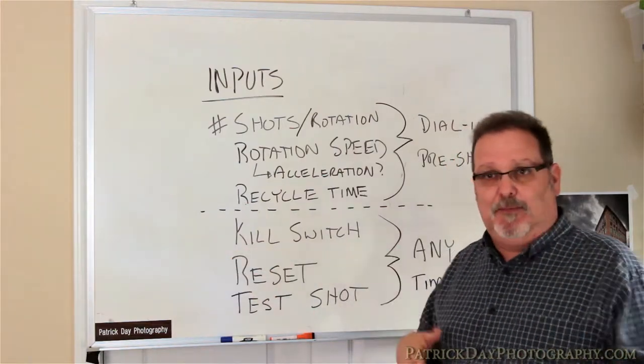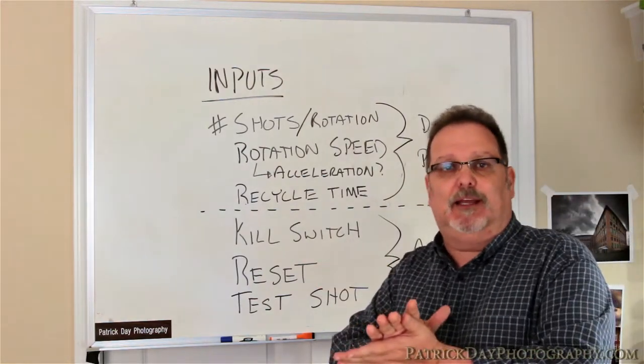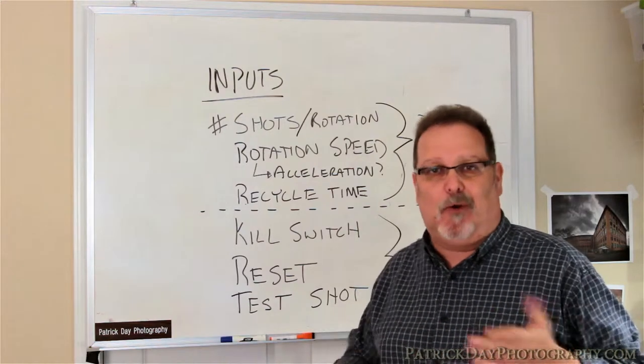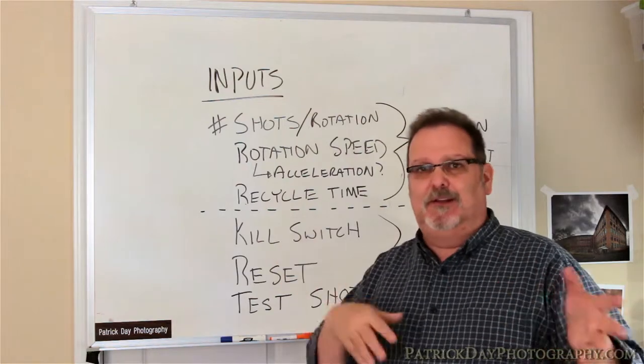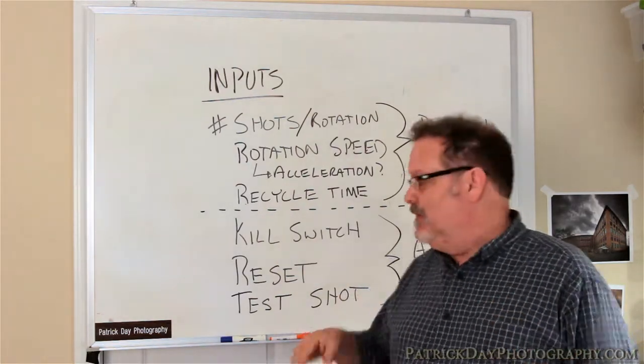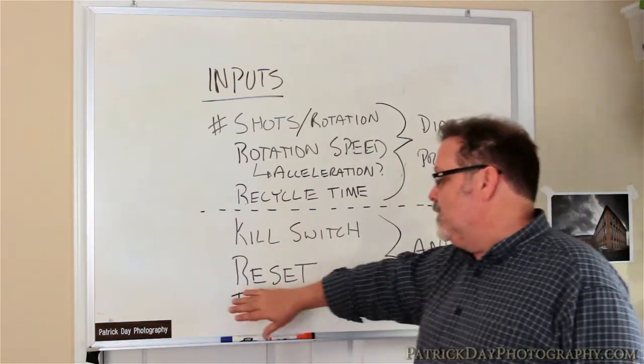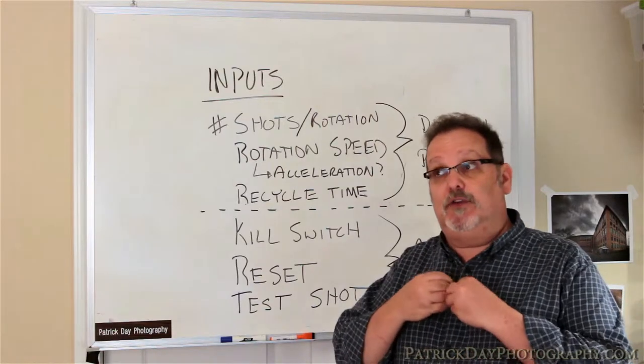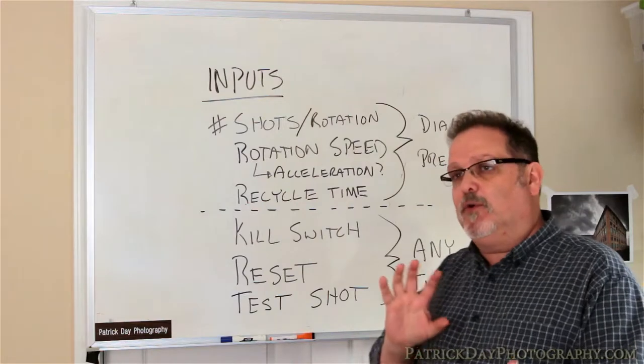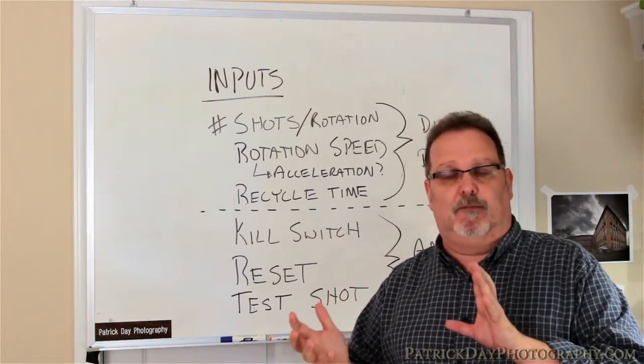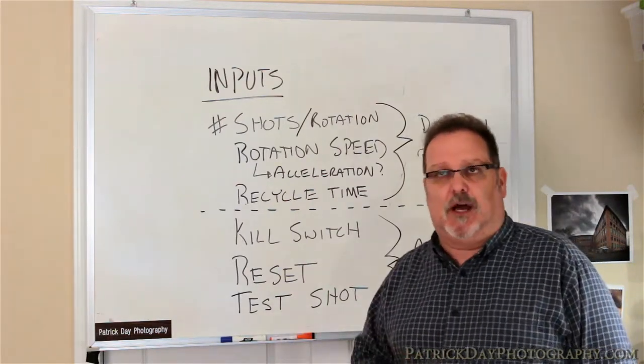You're shooting, it topples over or something happens. You definitely want to be able to instantly stop it and kill the power. You don't want to ruin anything, especially you don't want to ruin the motor. So, we want to have some sort of dead man switch in there. We want to reset. So, when you take the shot and say something does fall over, you want to bring it back to zero to start from the beginning again. So, put a reset switch in there.